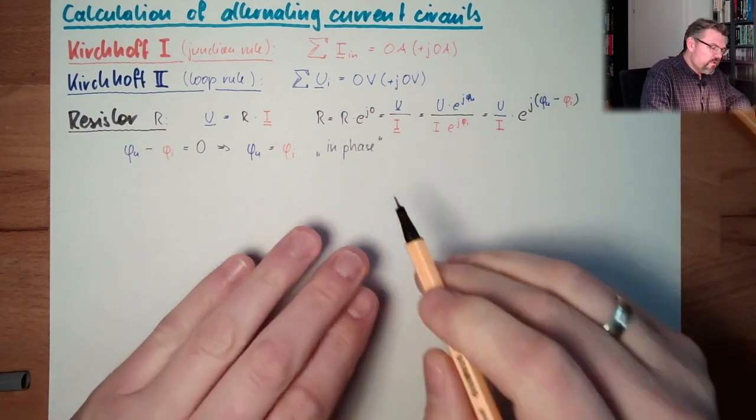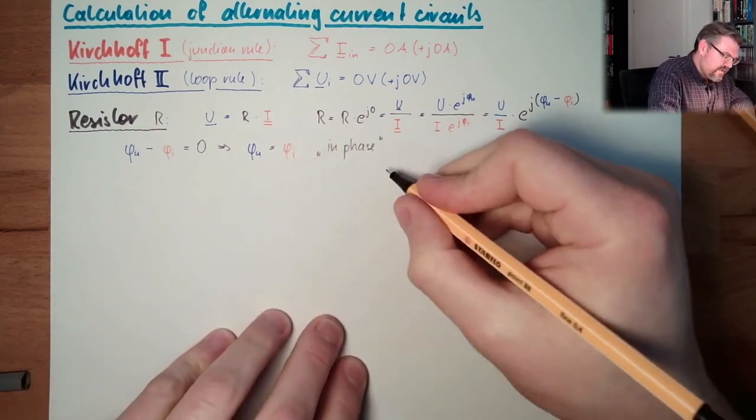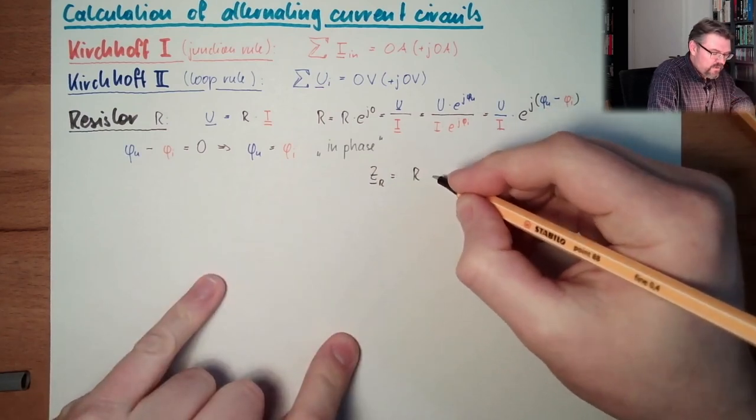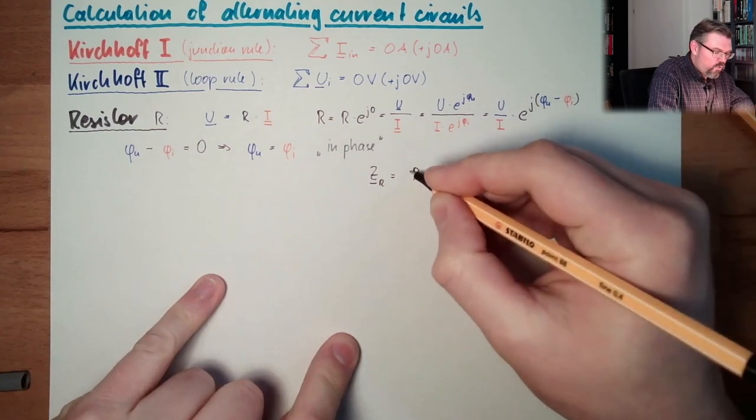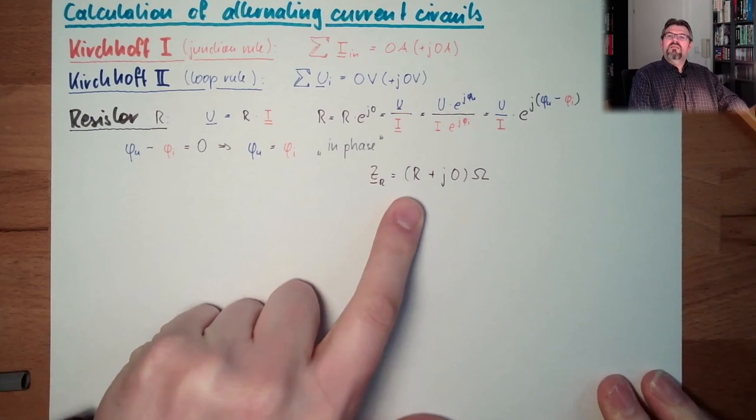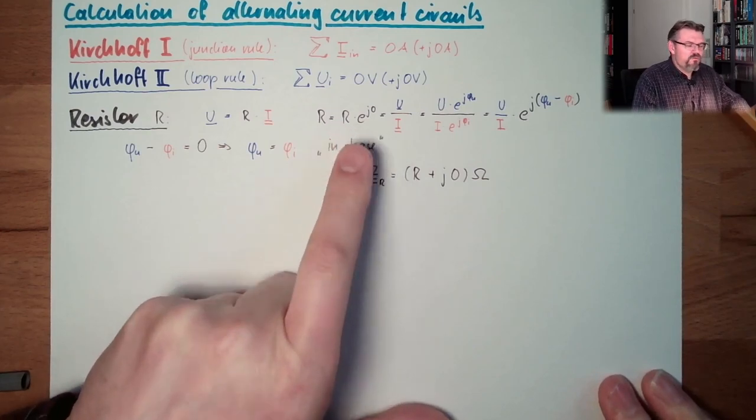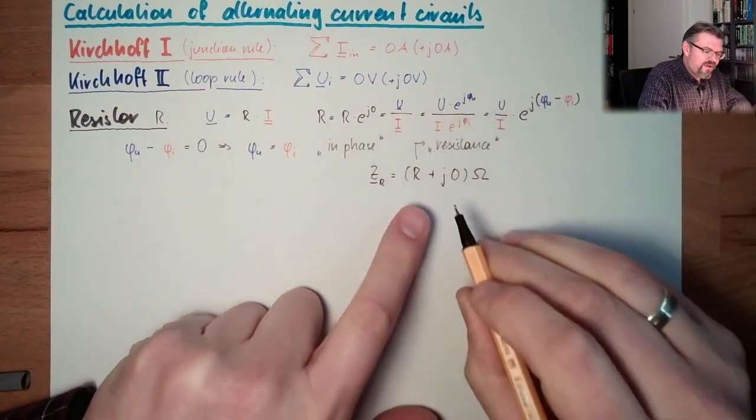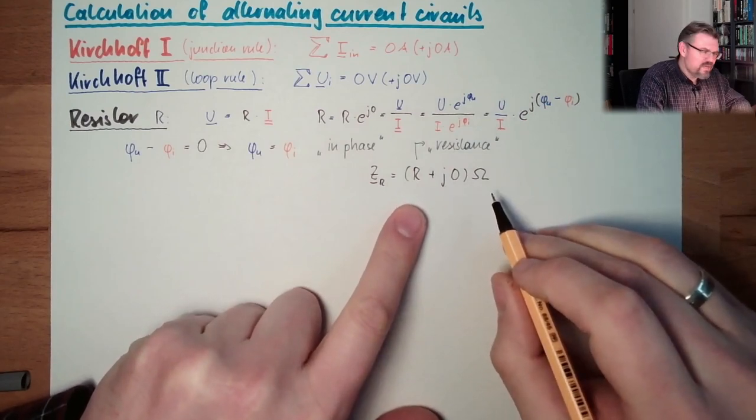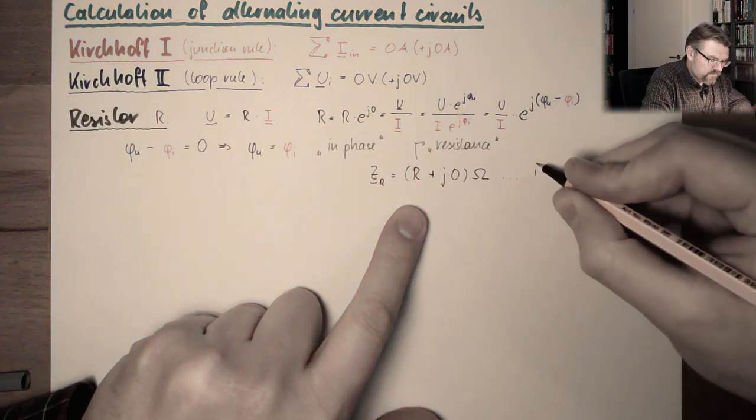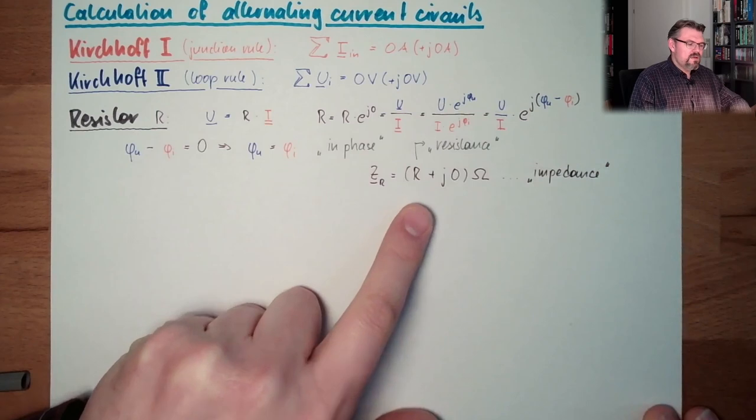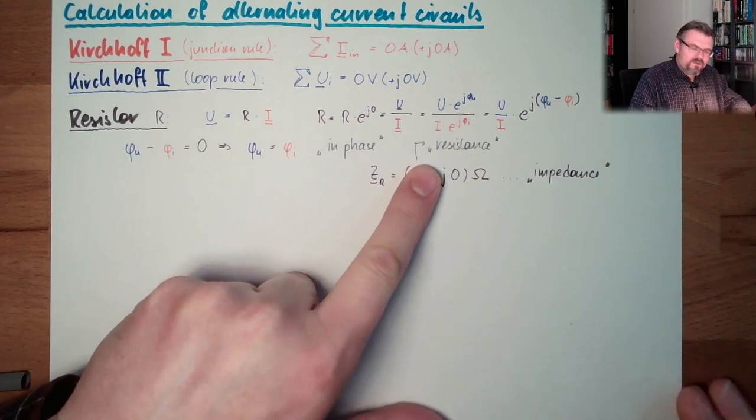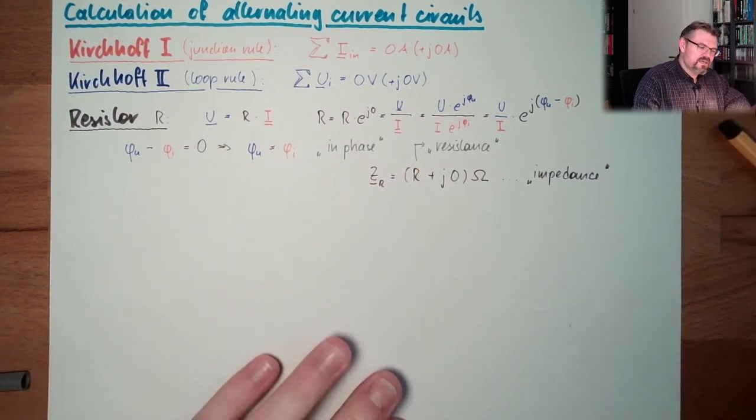And now, if we want to write this as a complex number, this resistance, then we have a set R equals, and now we have the real part, plus J zero ohm. This would be the complex representation of a resistor. This thing here is the resistance. And if it's a complex resistance, it's called not resistance, it's called impedance. Resistance is the real part of the impedance.